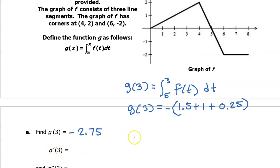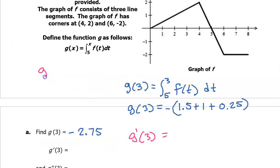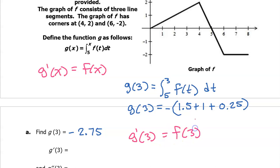Now let's find g prime at 3. We need to remember how to take the derivative of an integral defined function. This is the common case of the second fundamental theorem of calculus — the lower limit is a constant and the upper limit is x, so the derivative is just f of x. So g prime of x is simply f of x, which means g prime at 3 is just f at 3. Looking at the graph of f, the value of f at 3 is 1.5. So g prime at 3 is 1.5.